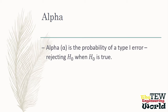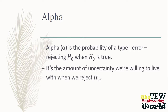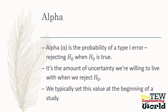Alpha is the name for the probability of a Type 1 error — rejecting a null hypothesis when the null hypothesis is true. It is the amount of uncertainty we are willing to live with when we reject a null hypothesis. We typically set this value at the beginning of a study.